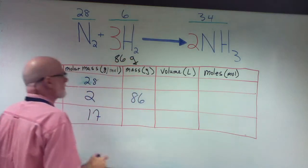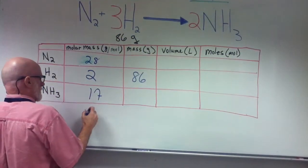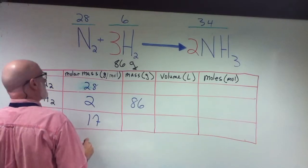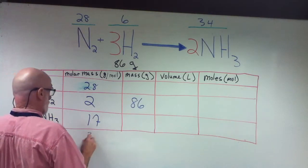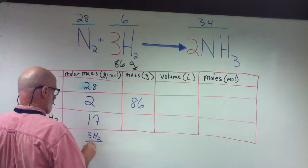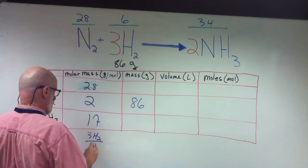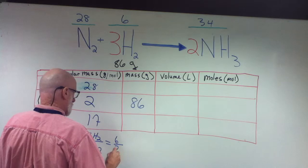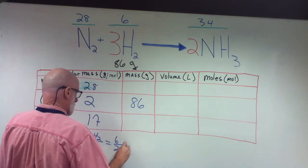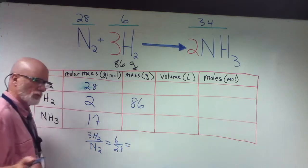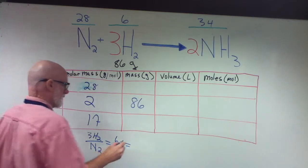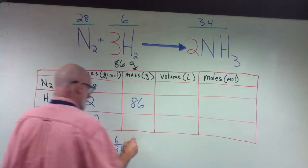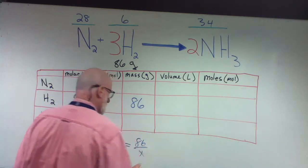So it says 3H₂ over N₂ equals 6 over 28, equals 86 over X.